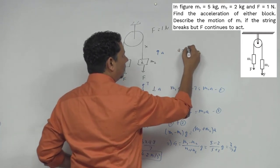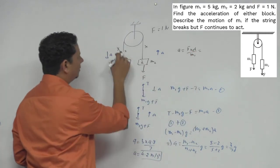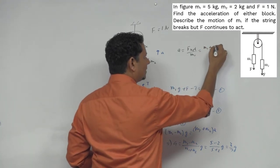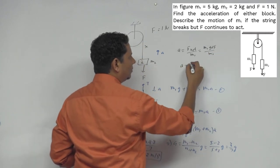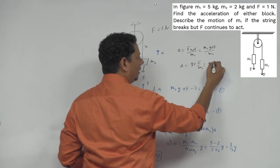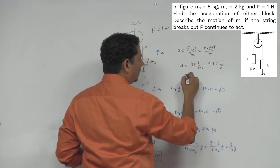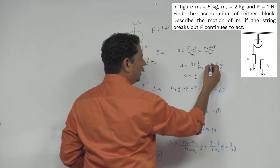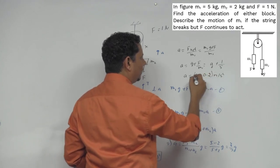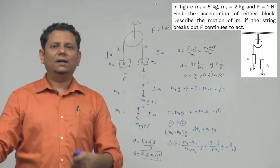Now in that case, the acceleration will be equal to F net divided by m1. This is your acceleration. So net force on this, since the string is broken, net force is m1 g plus F divided by m1. So your acceleration will be g plus F by m1. So g value is 9.8 plus F is 1 divided by mass is 5. So acceleration is - let's give the answer in terms of g - g plus 0.2 meter per second square. This will be your acceleration for this block. So these will be our final answers.